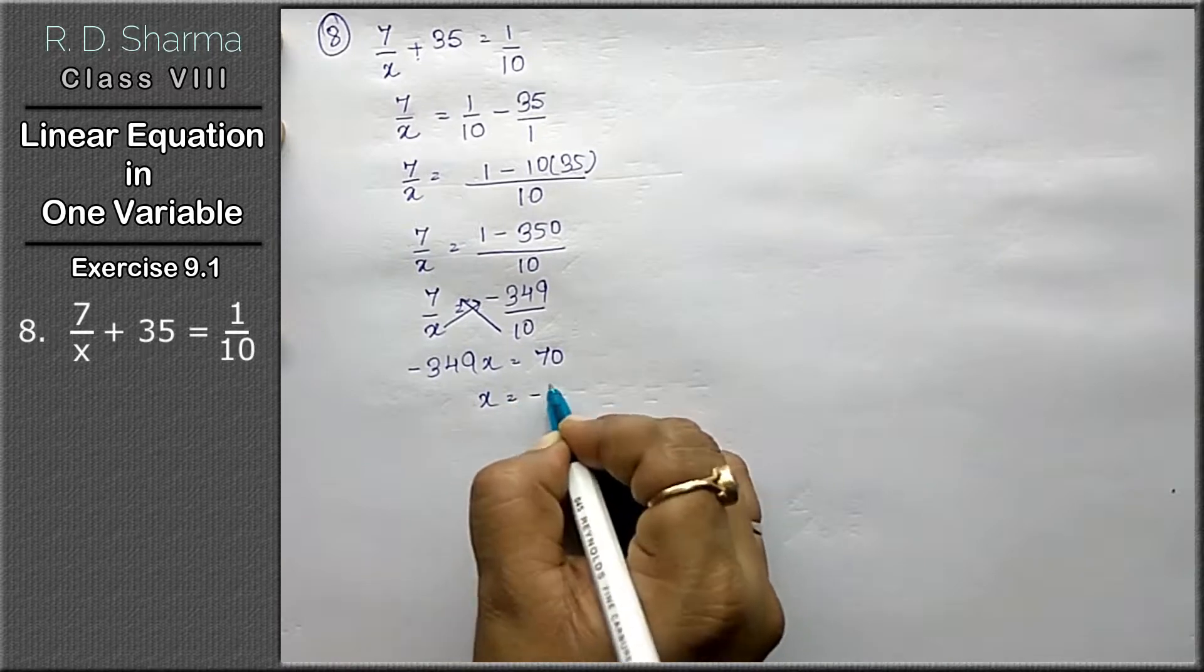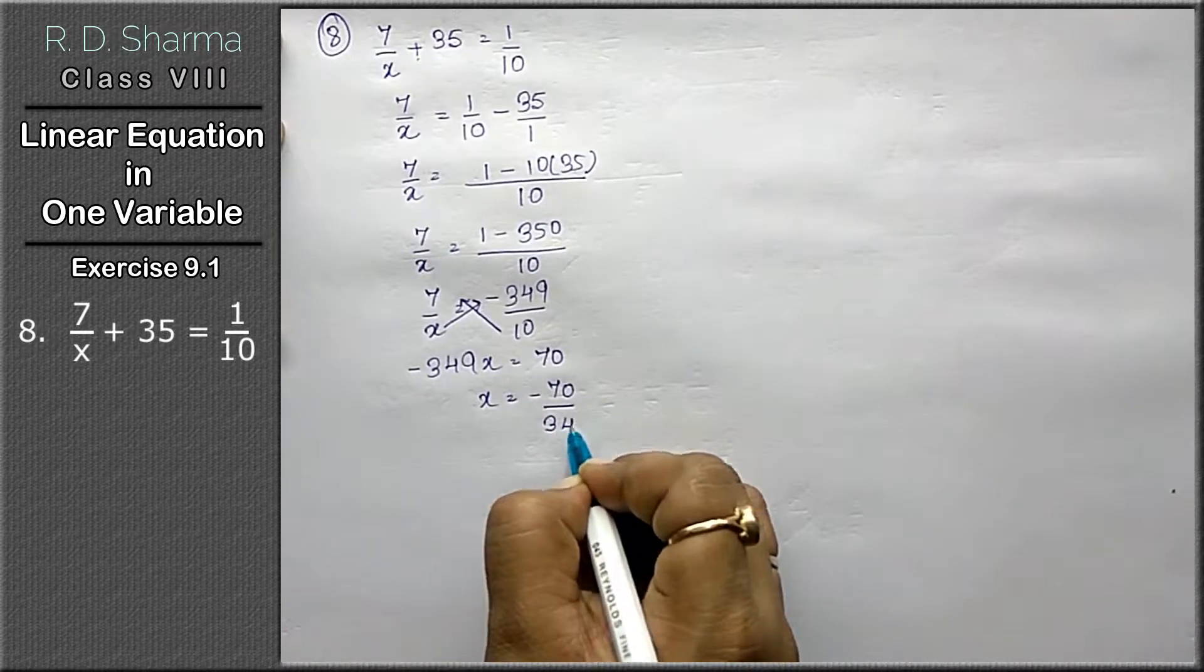x ki value ke itne aagaya? Minus 70 upon 349.